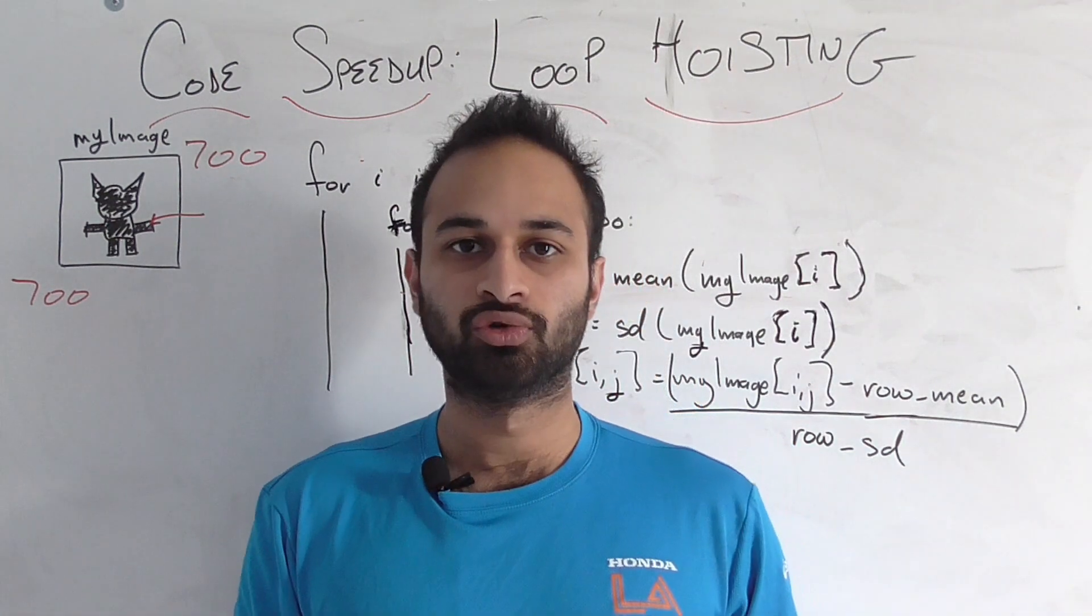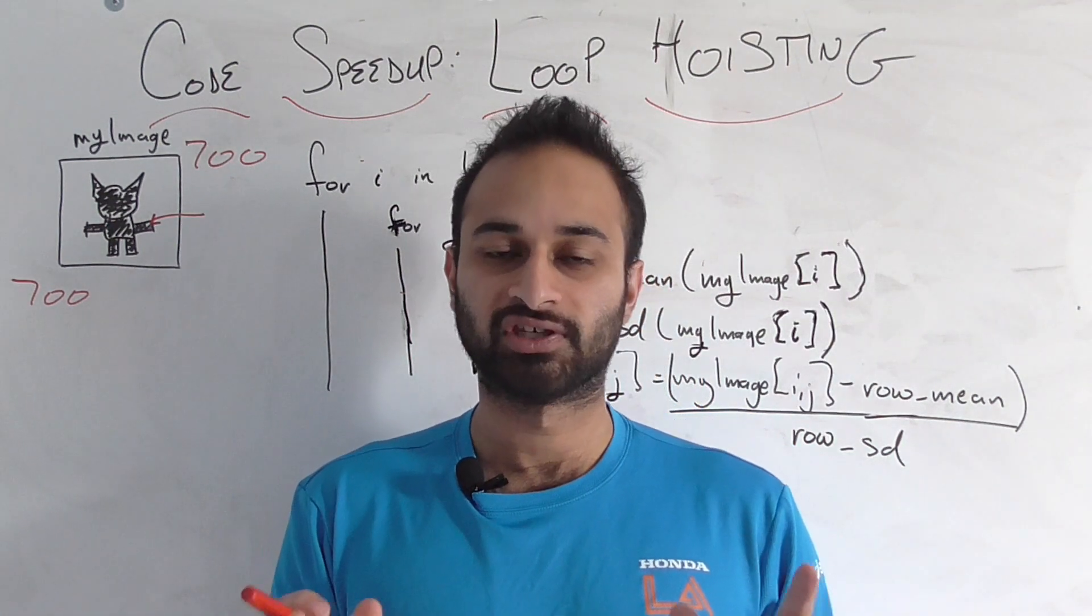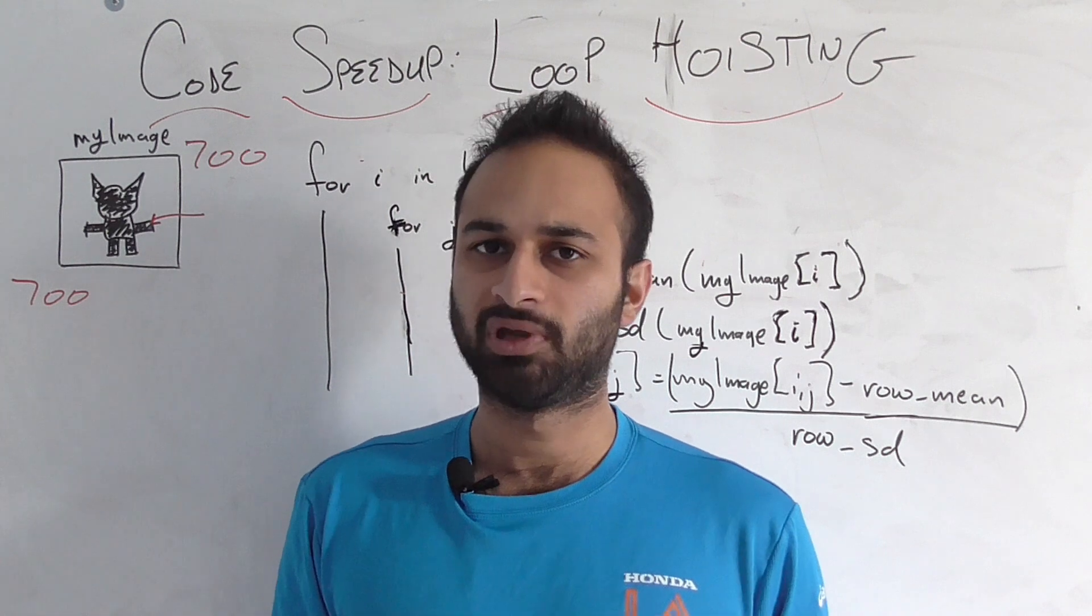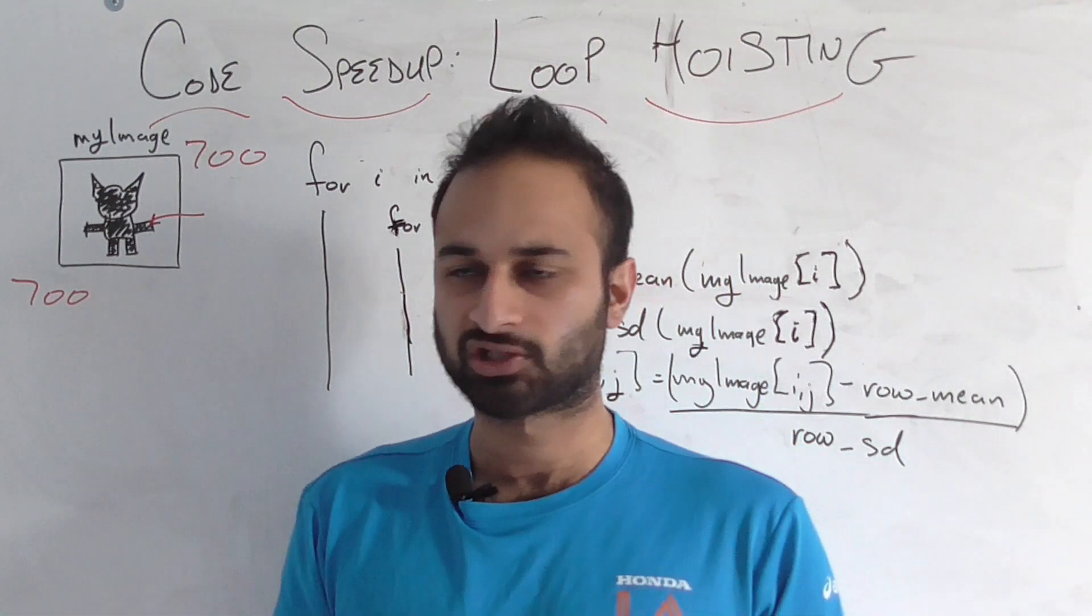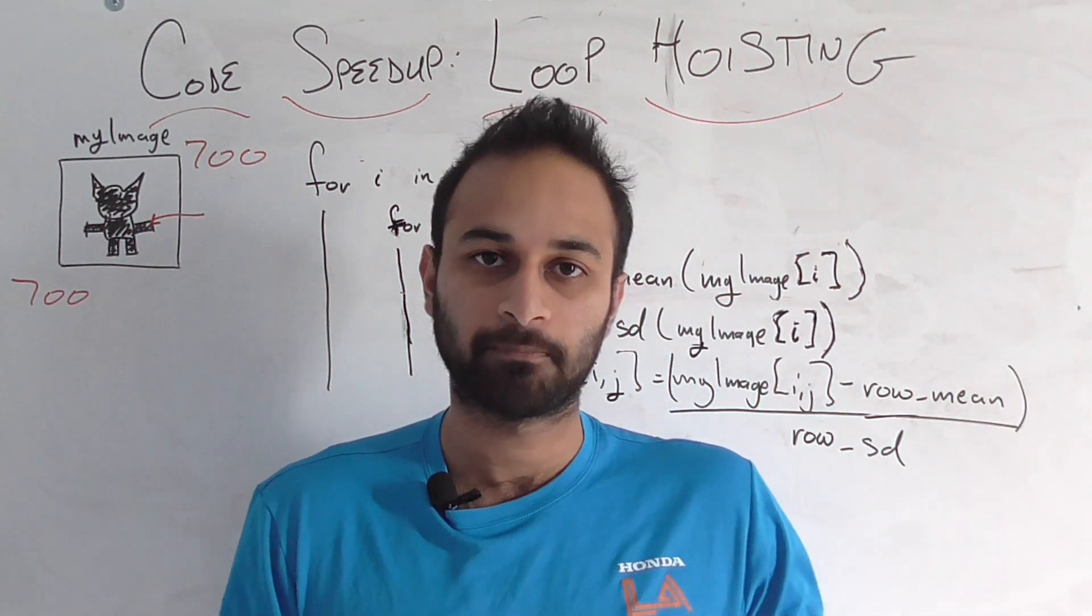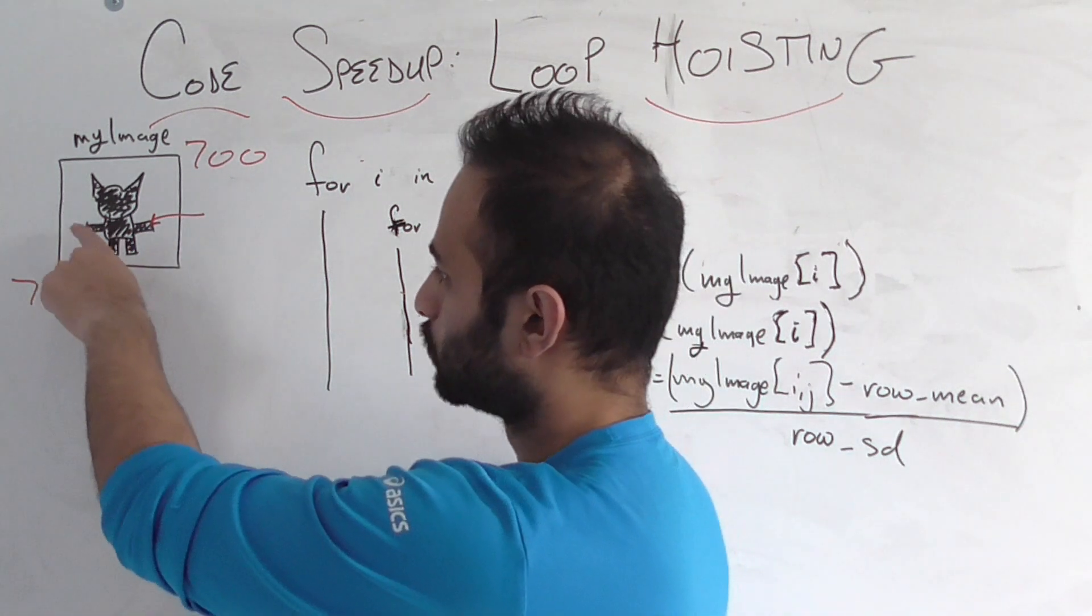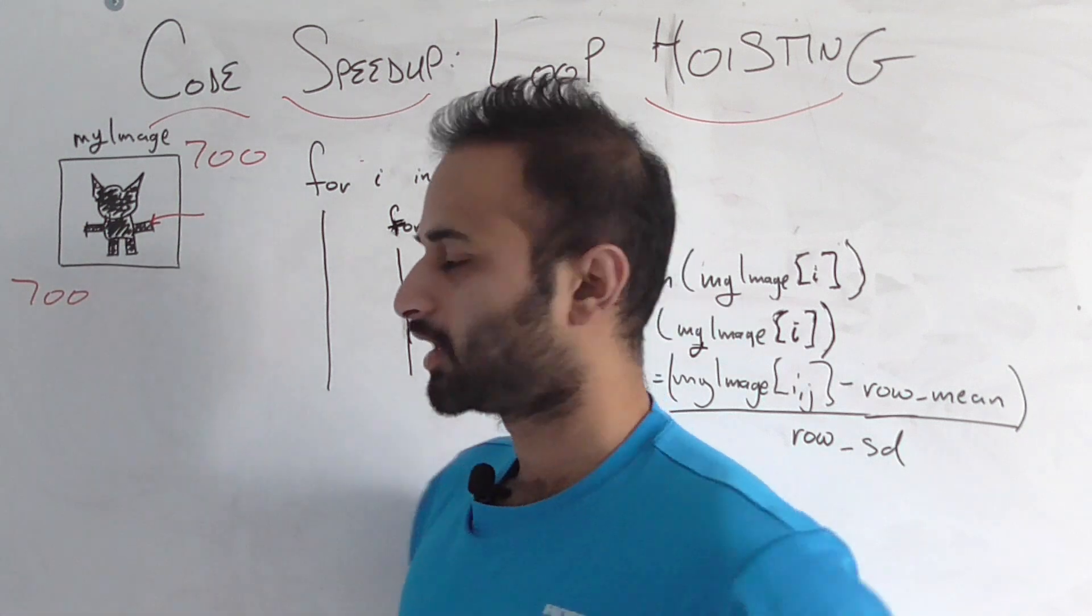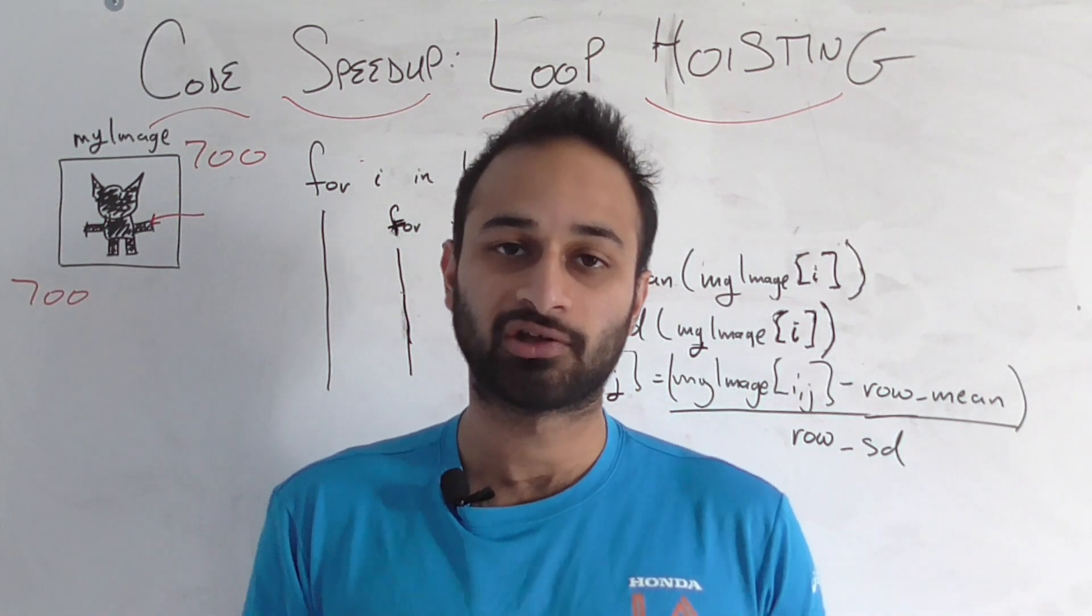Now our goal is to do some kind of normalization on this image. And by normalization we mean that, let's say we're talking about a specific pixel. Let's say the one that's pointed to by the red arrow. So some pixel that's part of the creature's hand maybe. Now this pixel belongs to a row, a row of pixels. And this row of pixels has a mean and a standard deviation.